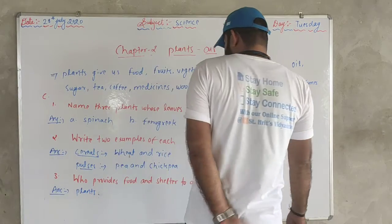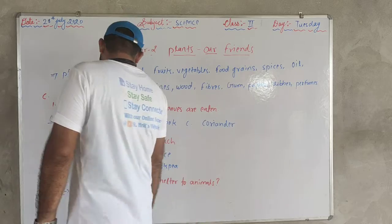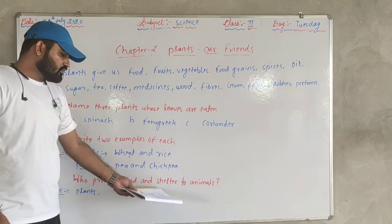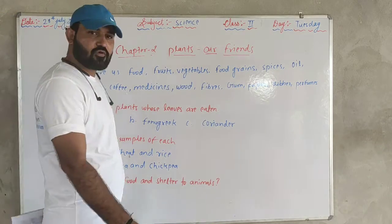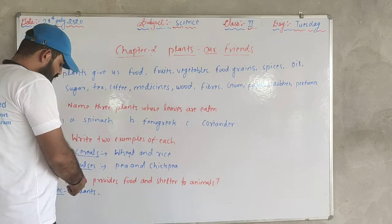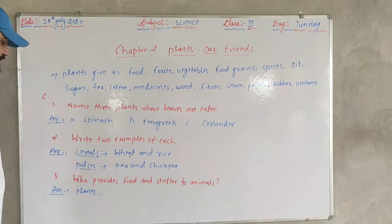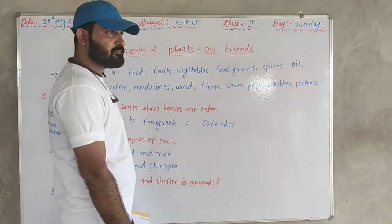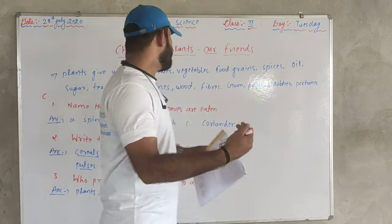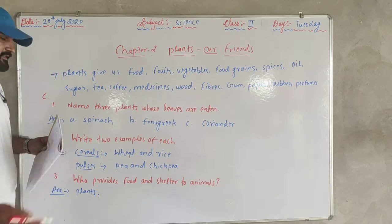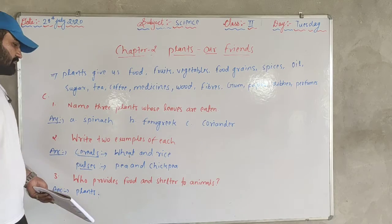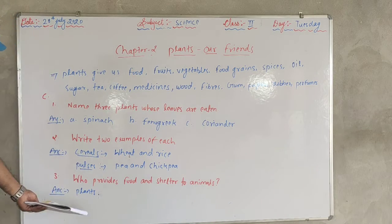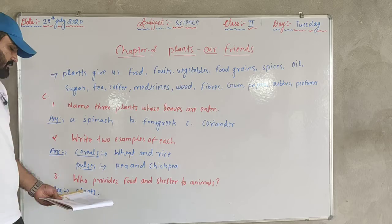Next question: who provides food and shelter to animals? The answer is plants. Plants provide food and shelter — plants provide so many things to animals.